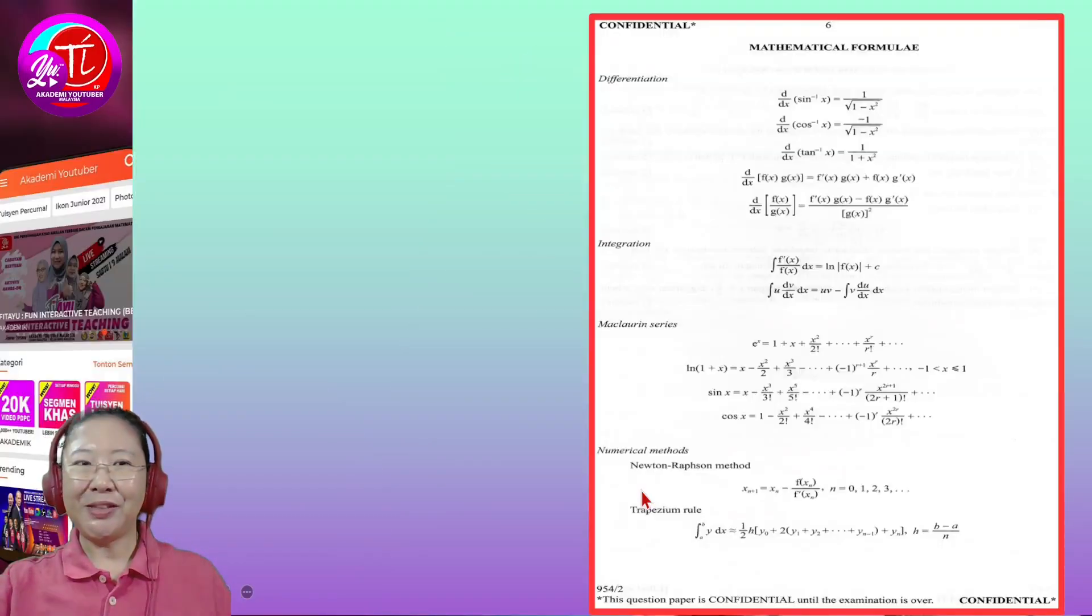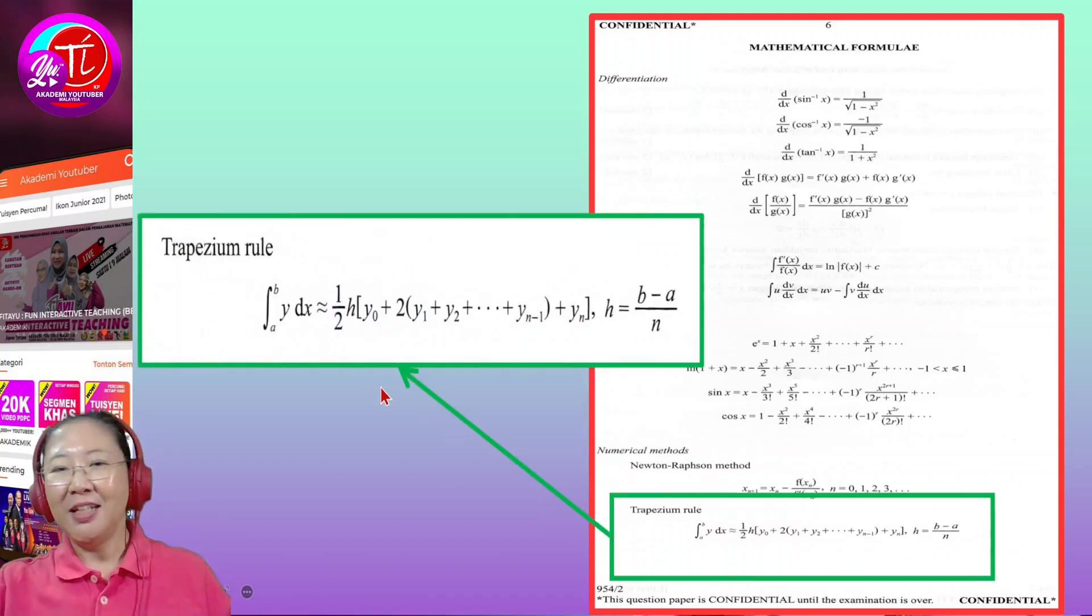Before we go to the question, you need to understand and know that the Trapezium rule formula is actually in your exam paper. You have the Trapezium rules and the formulas right there. And to take note, you have to know some details about the formula. The H is belonging to the height and they actually gave you a formula to calculate the height. B and A for the formula from the height is actually from here, where A is the number at the bottom of the integration and B is the one on top. So the big number minus the small number divided by N.